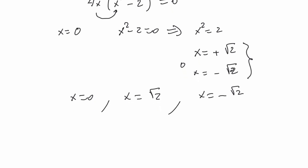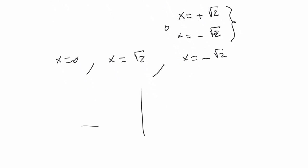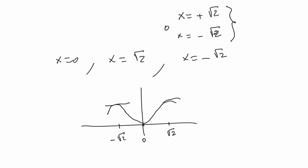At each of these critical points, the graph has a horizontal slope. At x equals zero, at x equals square root of 2, and at x equals minus square root of 2, the tangent line is horizontal. The graph will have a horizontal slope at all three of these points.